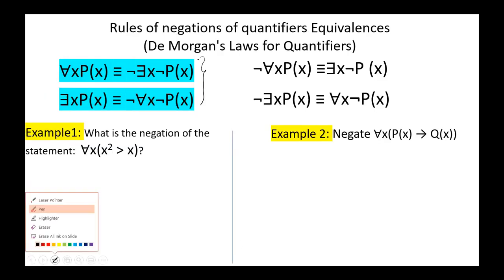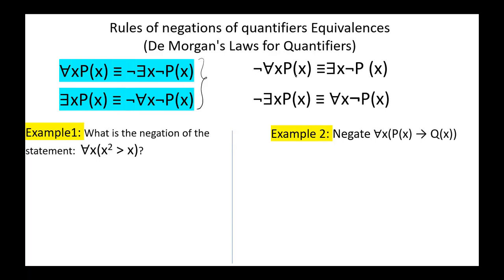These two rules are called the rules of negation of quantifier equivalences, also known as De Morgan's laws for quantifiers. From these two rules, we can obtain: the negation of for all x, P(x) is equivalent to exists x, not P(x); and the negation of exists x, P(x) is equivalent to for all x, not P(x).